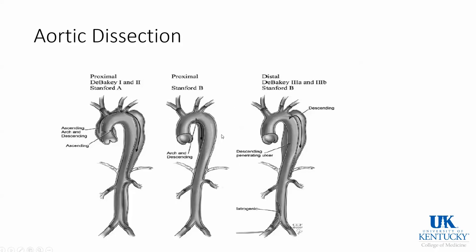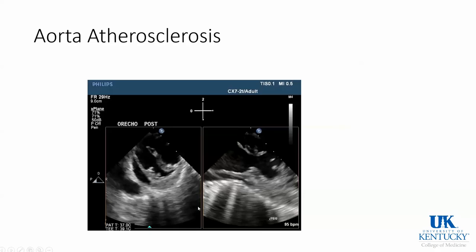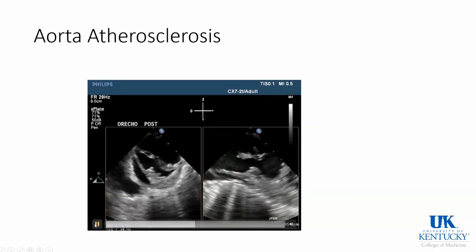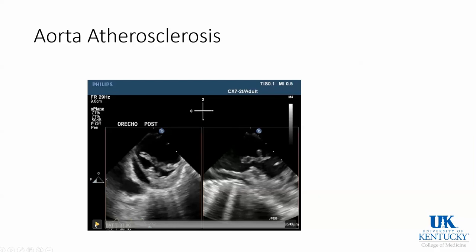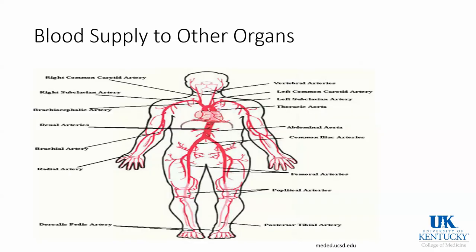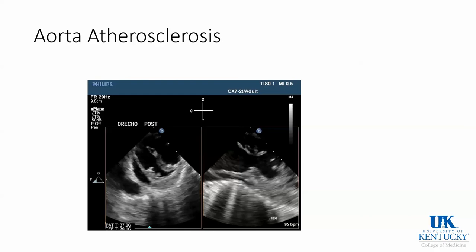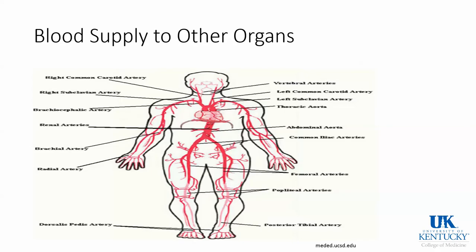This echo clip shows a very concerning picture of the descending aorta demonstrating plaque — these are mobile plaques. This patient is at very high stroke risk whether or not he has surgery.